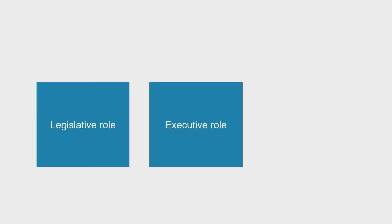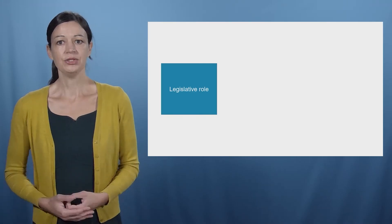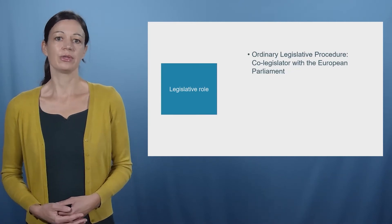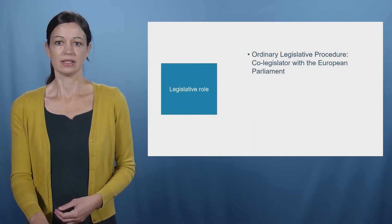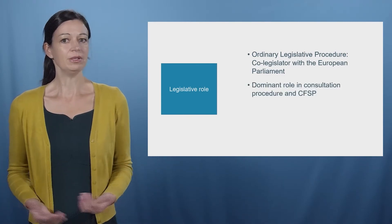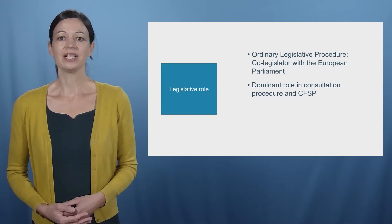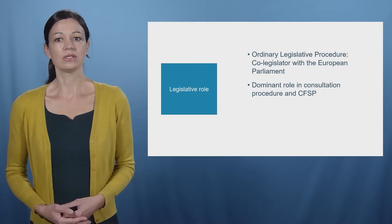The Council of the European Union's roles can be split into three categories: it has a legislative role, an executive role, and it also serves as a policy forum. The Council of the EU is a co-legislator of the EU. Nowadays, it is the co-legislator together with the European Parliament on a vast range of policy issues, to which the ordinary legislative procedure applies. Yet in some other decision-making procedures, the Council remains the dominant institution. For example, in the consultation procedure, the Council must consult the European Parliament, but it is not obliged to incorporate the Parliament's position. In the common foreign and security policy, the Council also plays a dominant role.